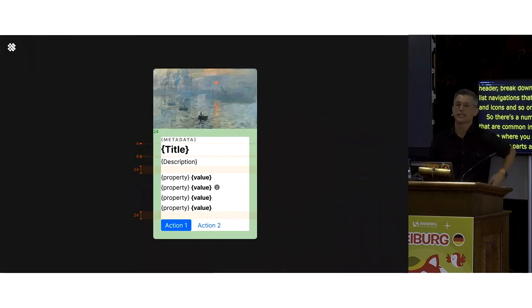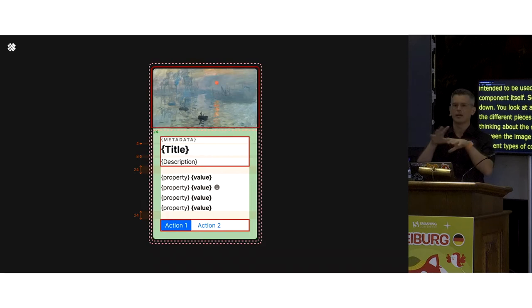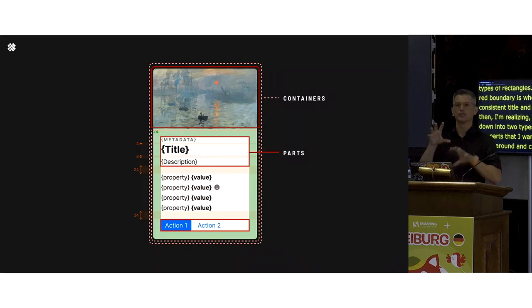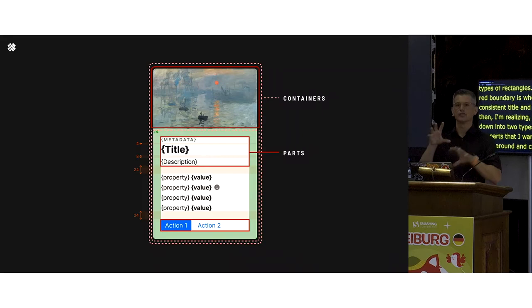When you look at a card, you see all the different pieces — the spatial model between the image and the various types of content. In my mind I immediately draw rectangles: the red-boundary box holds the consistent, configurable metadata, title, and description. I'm breaking the card into two types of things: parts I want to reuse and move around, and containers — different zones at different levels of hierarchy. For a card this might be an outer container and a smaller content area for media, text, and actions, all built specifically for making cards.